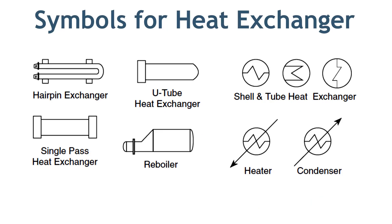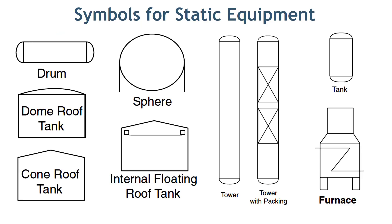These are the symbols for heat exchangers. On a drawing, you can see both types of symbols are used — the ones on the right-hand side are more frequent than the ones on the left-hand side. Static equipment are straightforward: vessel, drum, tanks, and furnace.